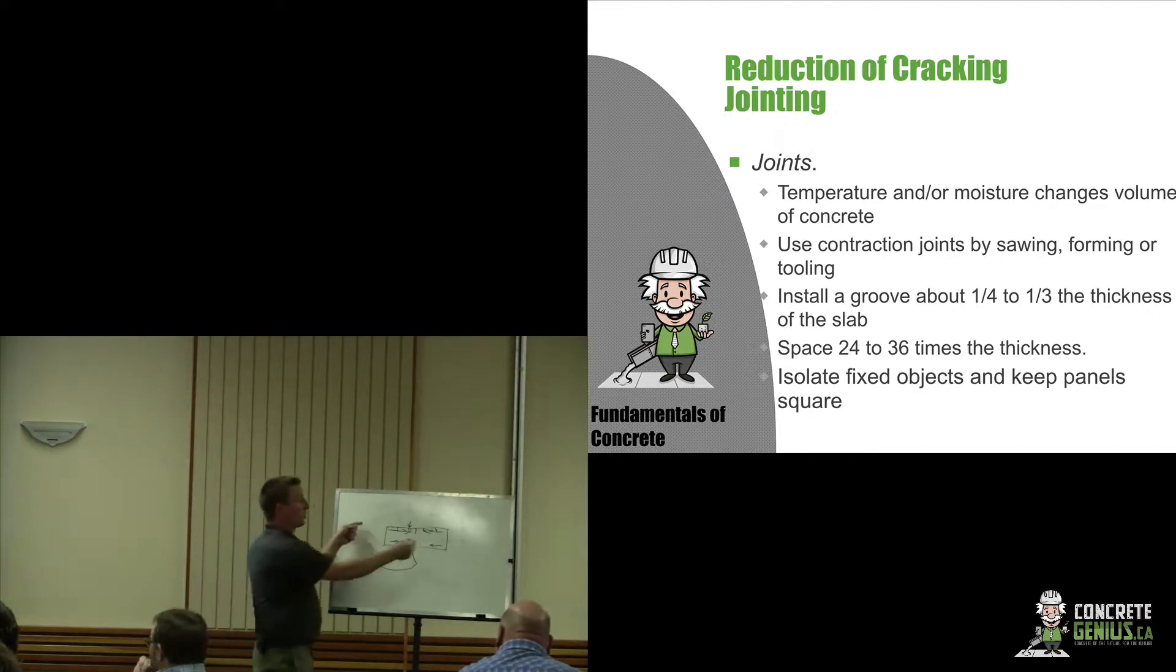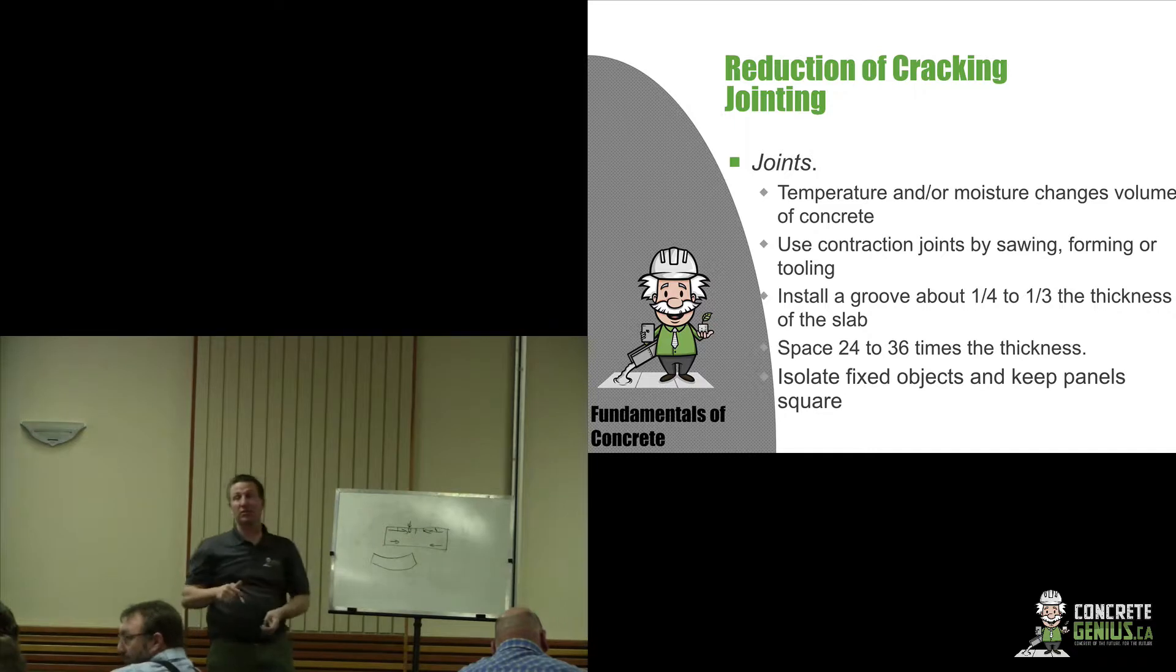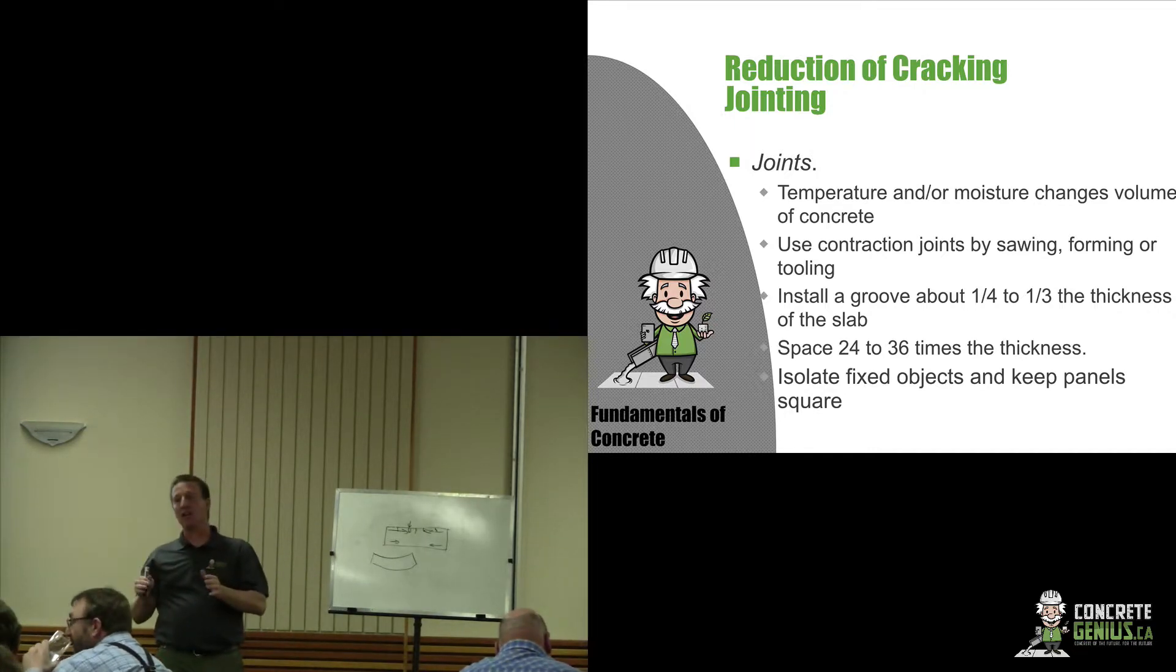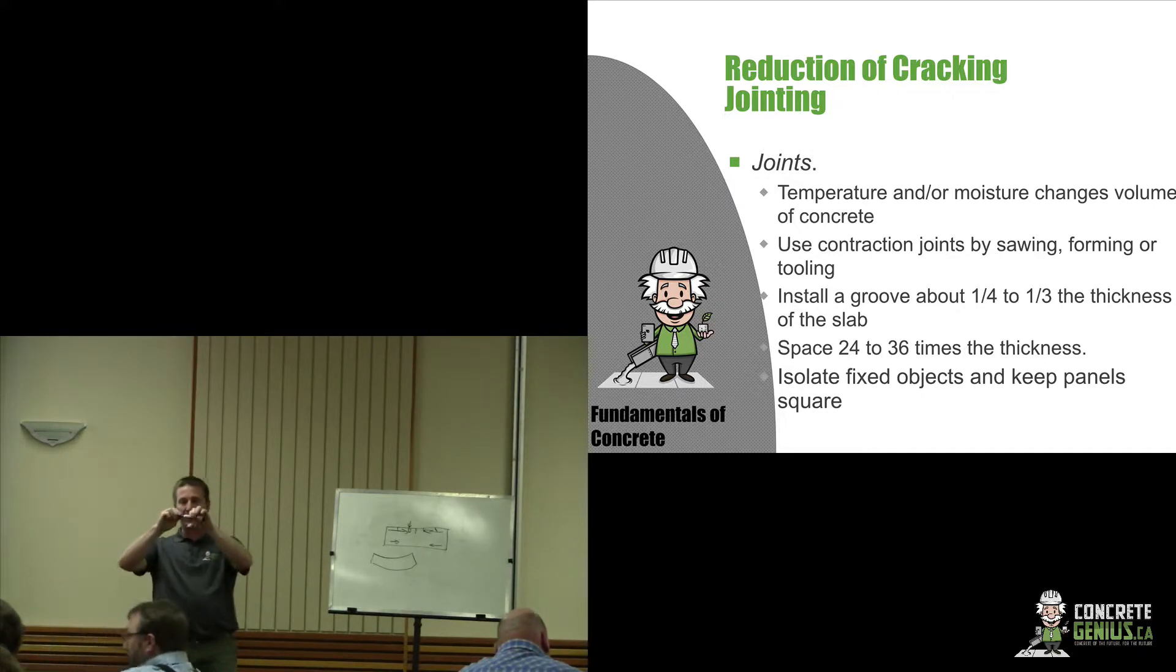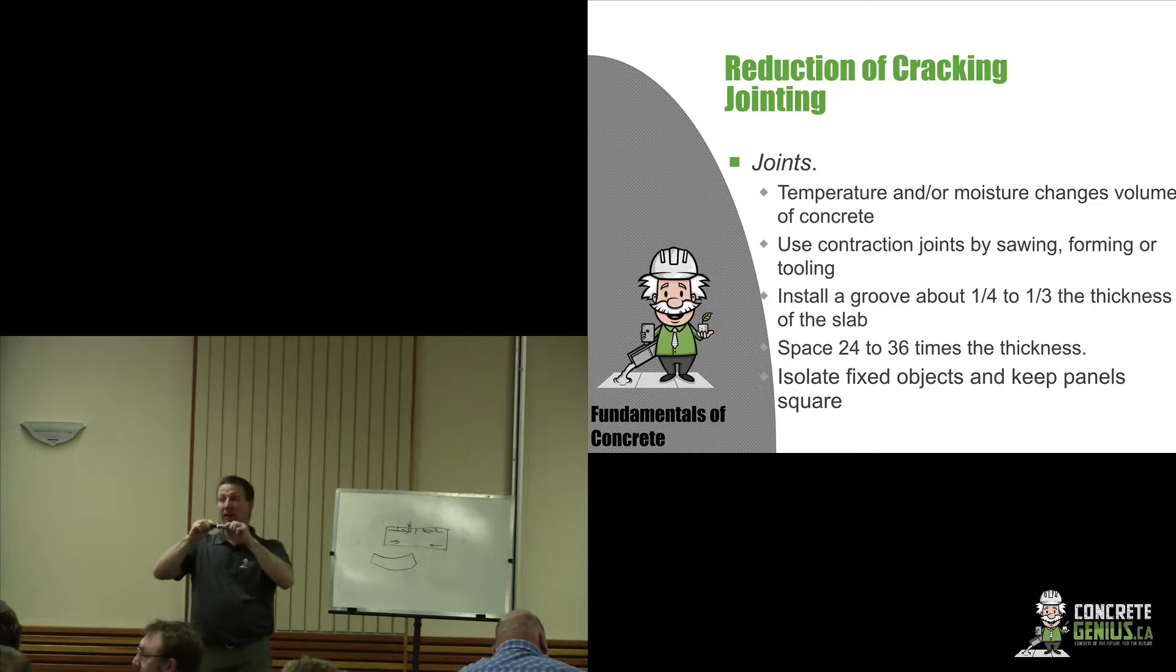As we're developing those stresses and those stresses start to develop, as soon as that concrete starts to turn hard, those stresses are developing. We're getting that tension because it's shrinking and it wants to pull apart. All we're doing is we're giving it the permission. We're weakening that spot so we can pull apart. That's the reason why we're saw cutting it.